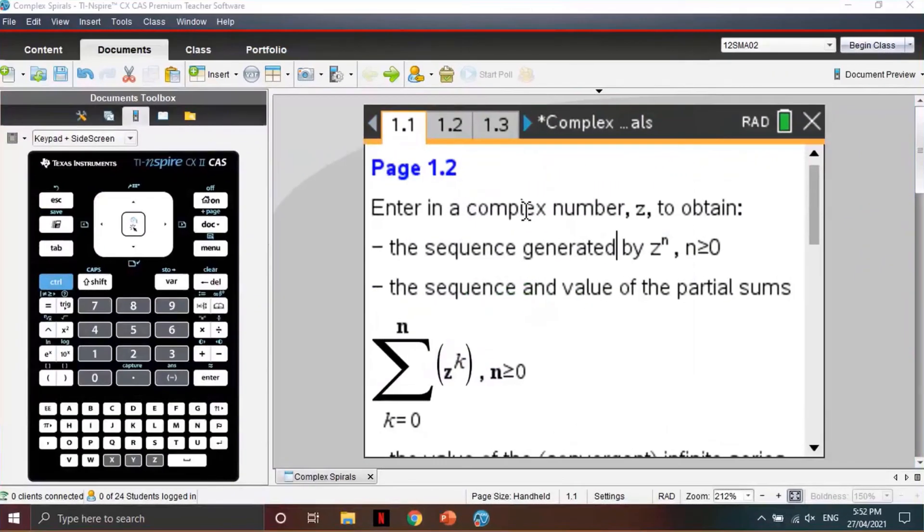For question 5, students are asked to plot values for partial sums. Students may find it useful to use the complex spiral's TNS file that comes with this investigation. Upon opening the file, navigate to page 1.2.